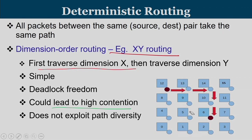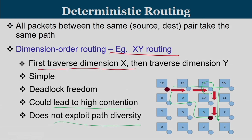XY routing is a very simple algorithm and is deadlock-free. However, since every packet between a given source-destination pair travels through the same set of intermediate routers, this can lead to high contention. If there is heavy congestion at an intermediate router such as router 14, all packets from 12 to 6 must use that path — there is no path diversity. Any contention in the existing path will delay all subsequent packets; with XY routing, there is no way to exploit alternative paths.